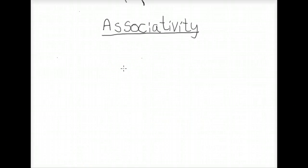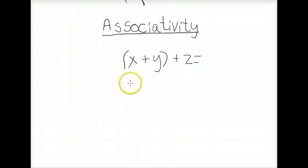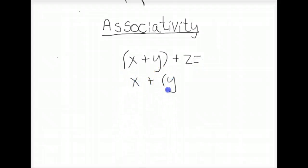The next property is the associativity property, which comes from the word associate, meaning to group together. Addition and multiplication of real numbers are associative operations. That means if you have real numbers x, y, and z, then (x plus y) plus z is equivalent to x plus (y plus z). You can do this in any combination.